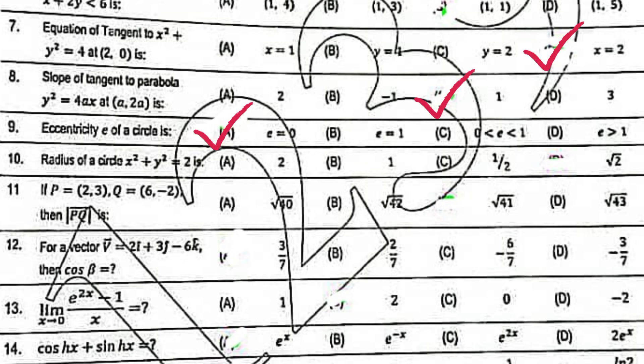Radius of circle x square plus y square equal to 2 is under root 2. P equal to 2, 3, Q equal to 6, minus 2. Then, PQ vector magnitude is under root 41.